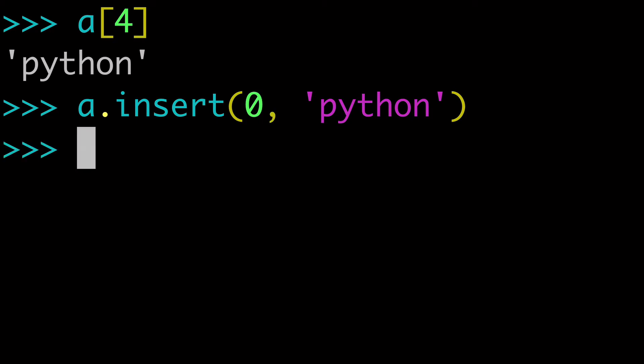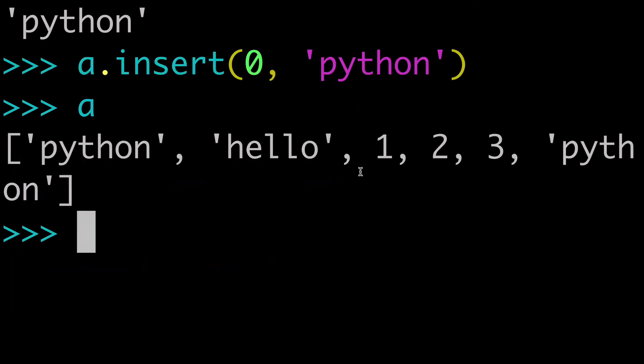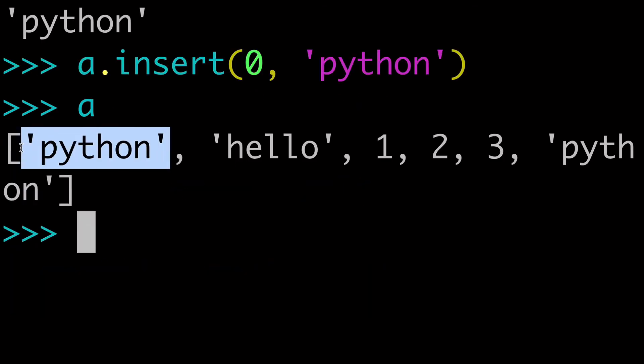So in a short period of time we've looked at how to insert values at the end of the list using len, or at the beginning by passing 0. If we run the insert at 0 again, we're going to add a second 'Python' at the start of the list. Now that we've covered the basics, let's get into some more use cases.